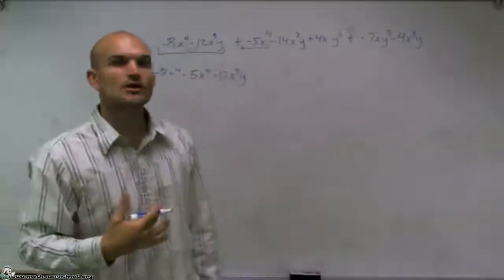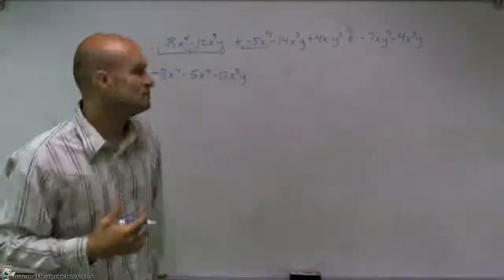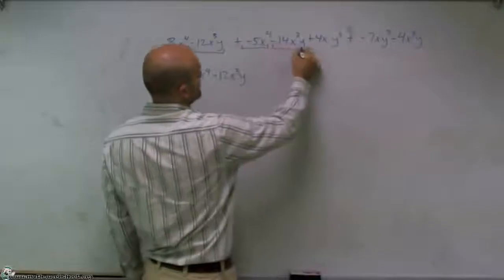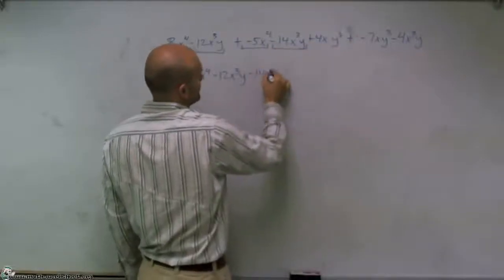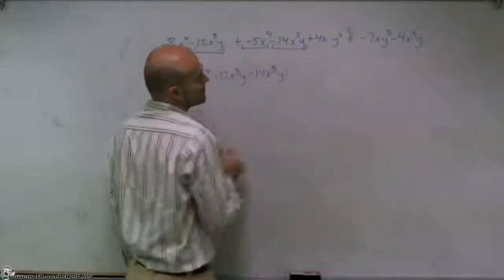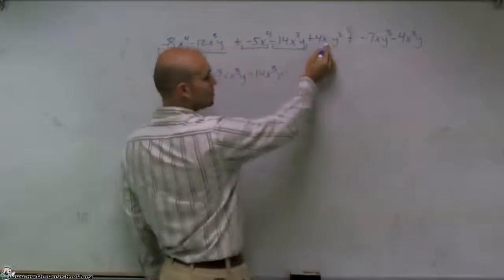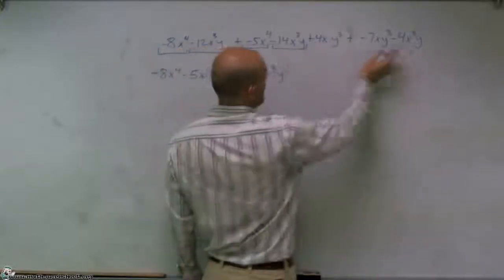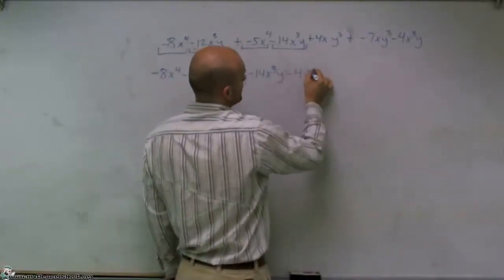So now I need to look at what are all the terms that have x cubed y. So I have negative 14x cubed y. And that's close, but that's an xy cubed. And then I have negative 4x cubed y.